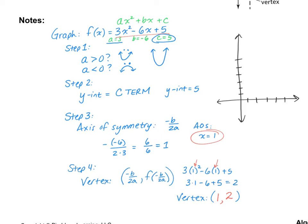Now we are ready to graph. We know the y-intercept is 5, so we go up 1, 2, 3, 4, 5 and put a point on the y-axis. The axis of symmetry is x equals 1, so I draw a line there. Because of the axis of symmetry, I know that since I had a y-intercept of 5, I will also have a point on the other side at the same height — they're equivalent on either side. We also know our vertex is at 1 comma 2. So we go ahead and draw a nice U-shape through those three points, and we have our answer.